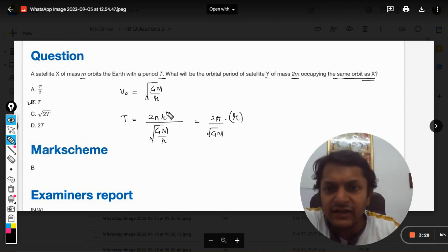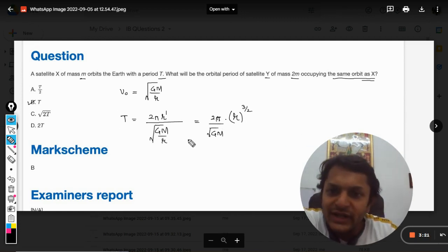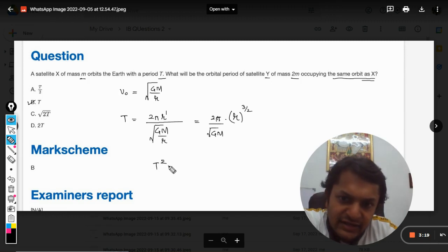And on squaring this equation, generally we write this equation like in our books. Generally you will find this formula r cube, and we will prove that T square is directly proportional to r cube.